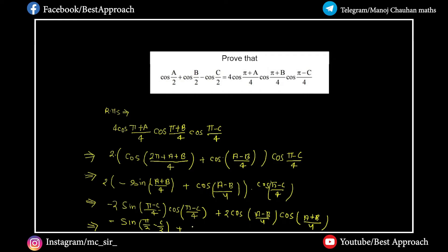You get 2 cos of a plus b. If you add, by 4 by 4 cancels, it will be a by 2, plus cos of a minus b. By 4 cancels, it will be a by 4. Sin of pi by 2 minus c by 2 minus cos of c by 2.